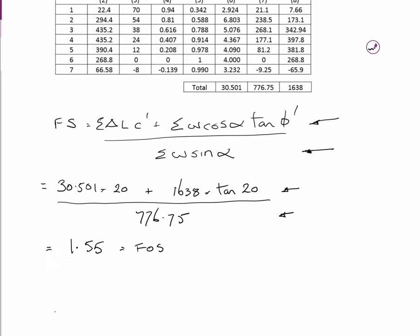And that factor of safety, if it decreases, as it starts to approach 1, the likelihood of slope failure increases. Closer to 1 it is, the closer it is to failing. If it's less than 1, it should have failed if it hasn't already. And that's the method of slices.